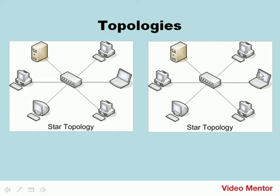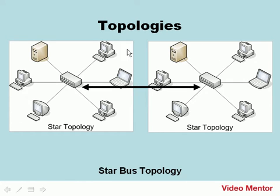A very common version of star is known as the star bus. In some cases, you may need to connect two star networks to each other. The easiest way to do it is to connect the two central connecting devices to each other — the hub in one LAN to the hub in the other LAN — giving you your star bus topology. You're effectively creating a bus between the two stars.